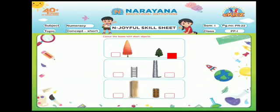Now, look at the second object. There are two ladders here. The first ladder is the short ladder.